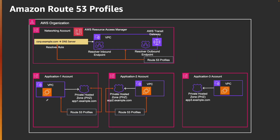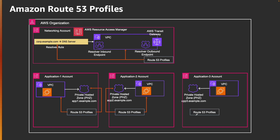Now let's see if a third application account comes in. Since you've already shared your Route 53 profile, it will be available in application account three as well. You just associate it with the VPC and the private hosted zone, and after that you don't need to do anything else. This VPC can resolve the DNS of the other two applications because those private hosted zones are associated with the Route 53 profile. It can resolve on-prem DNS because the resolver rule is in the profile, and on-prem can also resolve app3.example.com because the profile is associated with the private hosted zone. That's how Route 53 profiles simplify your entire DNS management — no cross-account sharing or cross-account private hosted zone associations needed, just manage everything centrally from the networking account.